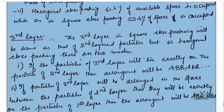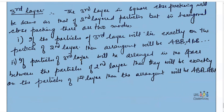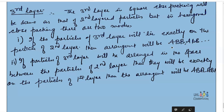But in hexagonal close packing there are two modes. First, if the particles of the third layer will lie exactly on the particles of the second layer, then the arrangement will be an A-B-B arrangement. But if the particle of the third layer will lie in between the spaces of the particles of the second layer, then they will be exactly on the particles of the first layer, and the arrangement will be an A-B-A arrangement.